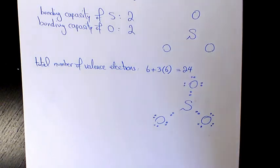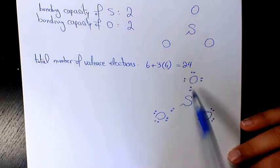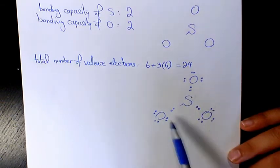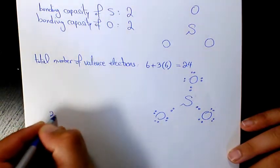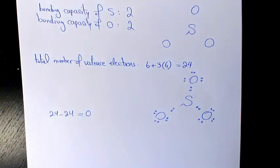how many of these electrons are used and how many we still have available valence electrons. So let's count: one, two, three, four, five, six, seven, eight, nine, ten, eleven, twelve. Twelve times two is twenty-four, so twenty-four minus twenty-four is going to be zero.